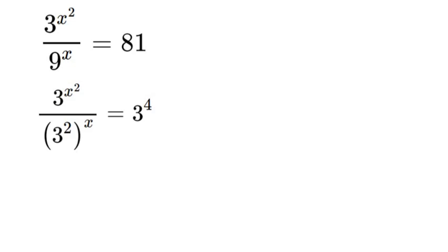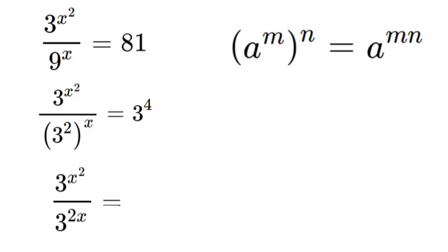Now that we've done that, we're going to use an exponent property to simplify this. So, if you have a to the power of m to the power of n, it is equal to a to the power of m times n. Now, let's apply that to the denominator of this equation. So, if we do that, we'll have 3 to the power of x squared over 3 to the power of 2x is equal to 3 to the power of 4.